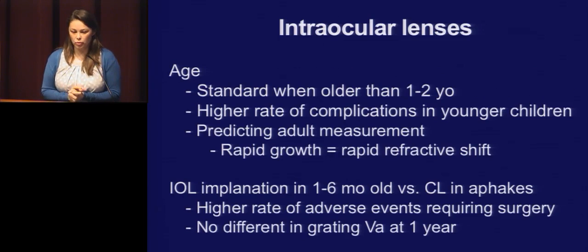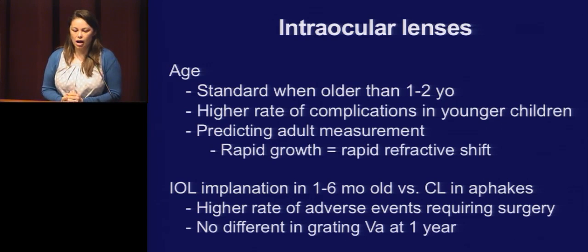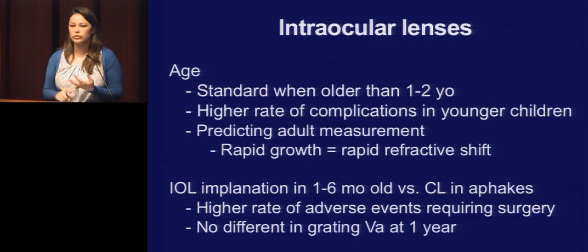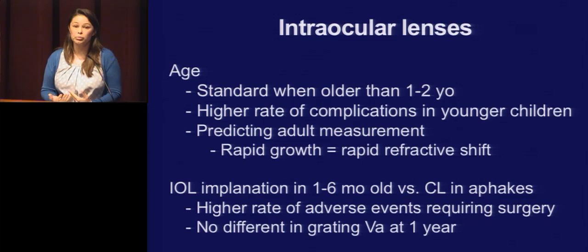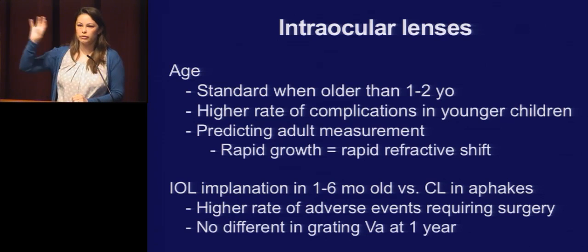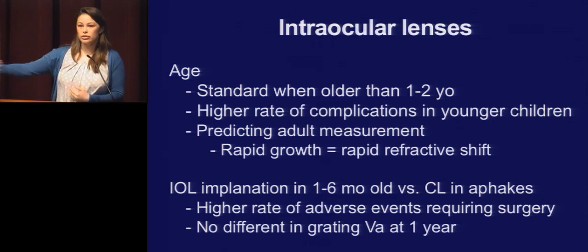The standard for IOL placement is that you start considering it at one to two years. I usually will do it over age two. Under one, outcomes aren't as great — they tend to have a higher rate of complications the younger they are: glaucoma surgery, scarring, dislocated lenses. With such rapid growth in those first few years, it's really hard to predict what lens to put in. When I'm putting a lens in a two- or three-year-old, I'm putting in a lens predicted for their adult refractive status so they can grow into it, and they'll wear glasses or contacts while they're a child.